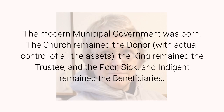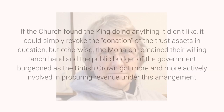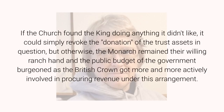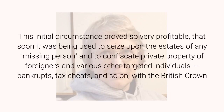The church remained the donor with actual control of all the assets, the king remained the trustee, and the poor, sick, and indigent remained the beneficiaries. If the church found the king doing anything it didn't like, it could simply revoke the donation of the trust assets in question. Otherwise, the monarch remained their willing ranch hand and the public budget of the government burgeoned as the British Crown got more and more actively involved in procuring revenue under this arrangement.